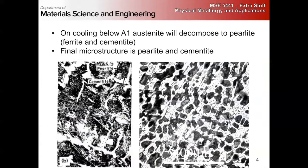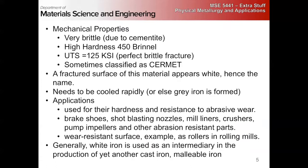The final microstructure is really a composite of pearlite and cementite. It's really much more of a cement than a metal — most of it is going to be Fe3C, which is ionic. You can imagine that this is incredibly brittle due to the large amount of cementite, very high hardness. We get perfect brittle fracture at around 125 MPa — actually I converted from KSI, this should be about 45 KSI.